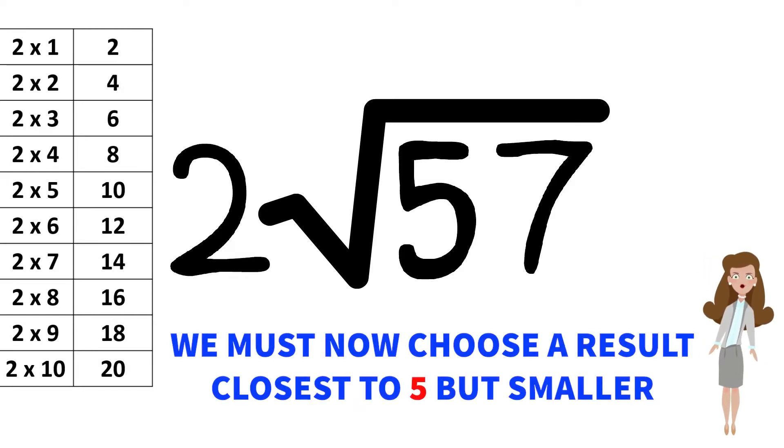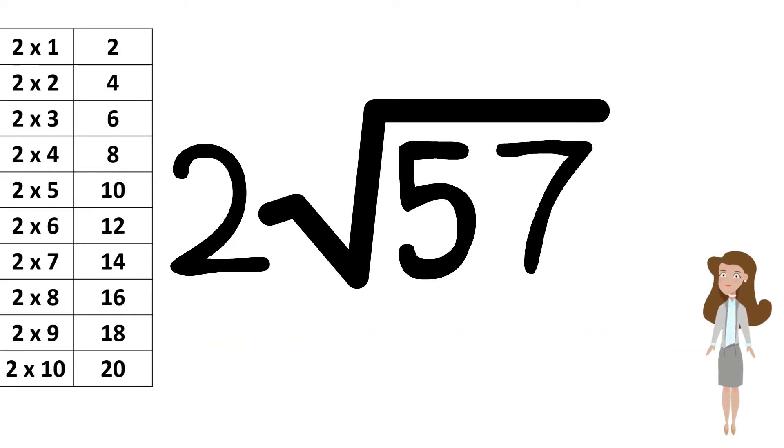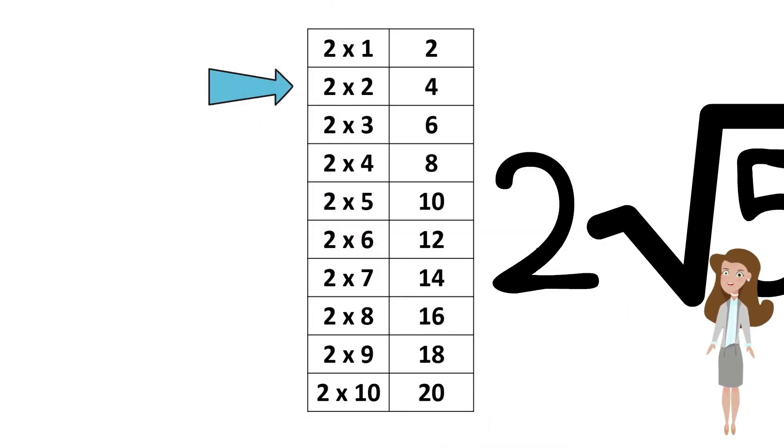In this case, we must now choose a result that is closest to 5, but smaller. We can see that the closest number to 5 and smaller than 5 is 4.